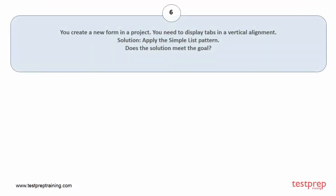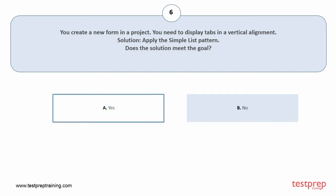Question number 6. You create a new form in a project. You need to display tabs in a vertical alignment. Solution: Apply the simple list pattern. Does the solution meet the goal? Your options are: A. Yes. B. No. The correct answer is option A.